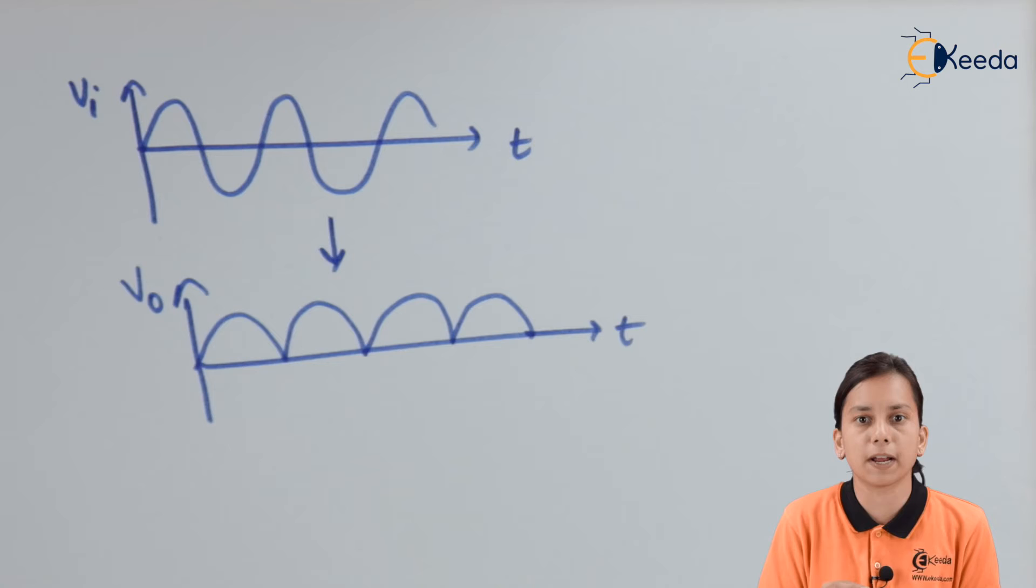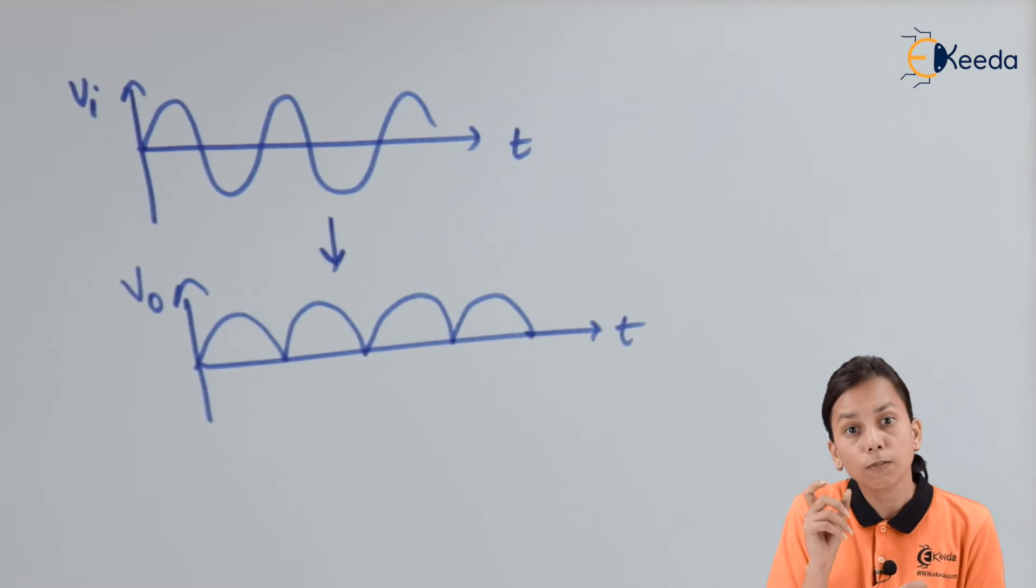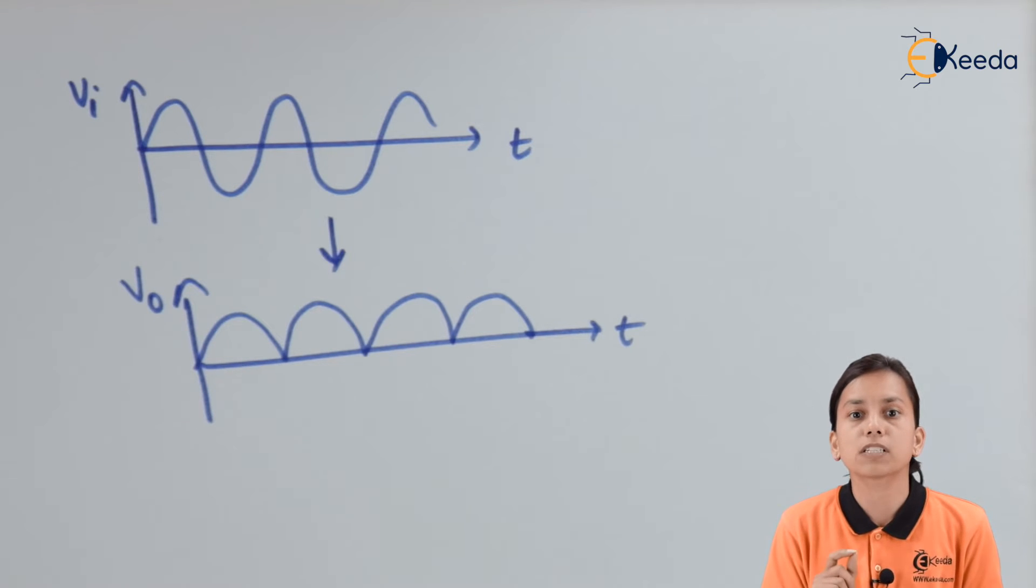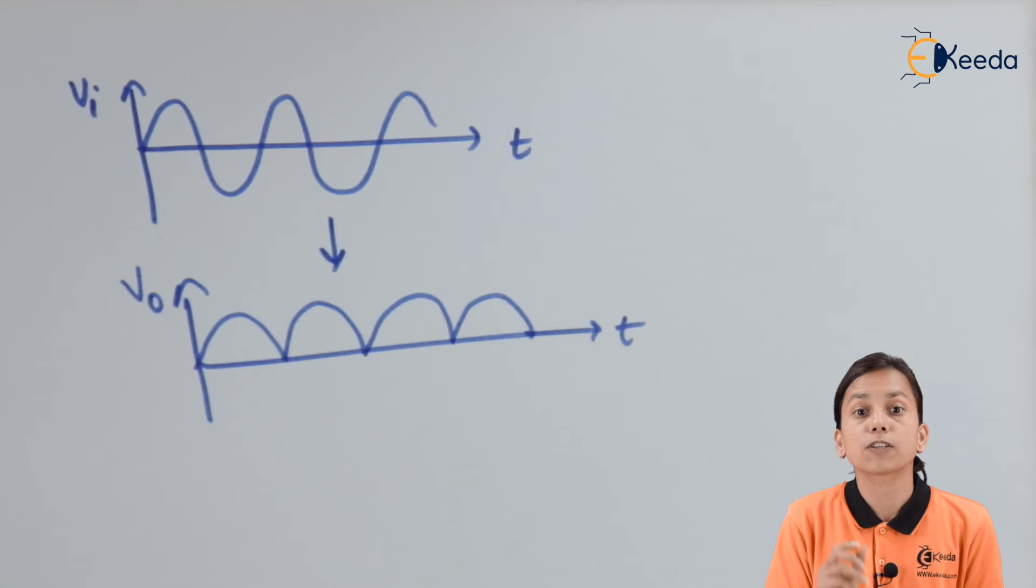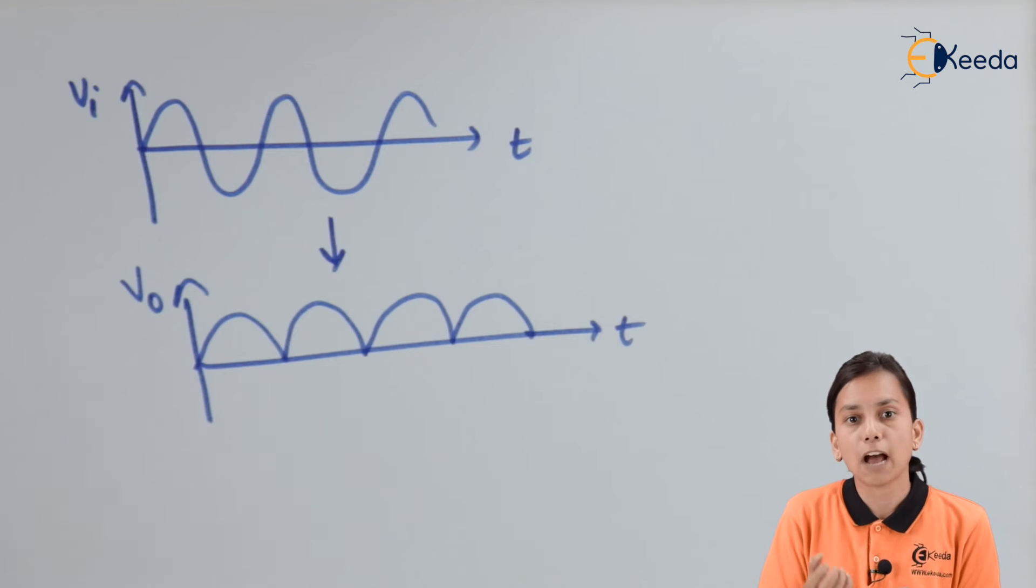Filter can remove that ripple portion from the output. It also gives us the smooth DC that is steady DC which we actually require for our circuits like TV, radio or any low voltage circuit. They always require a DC which is steady DC or a smooth DC or having a less ripple. We don't want any ripple in our circuit. So in order to reduce ripple we go for filter.